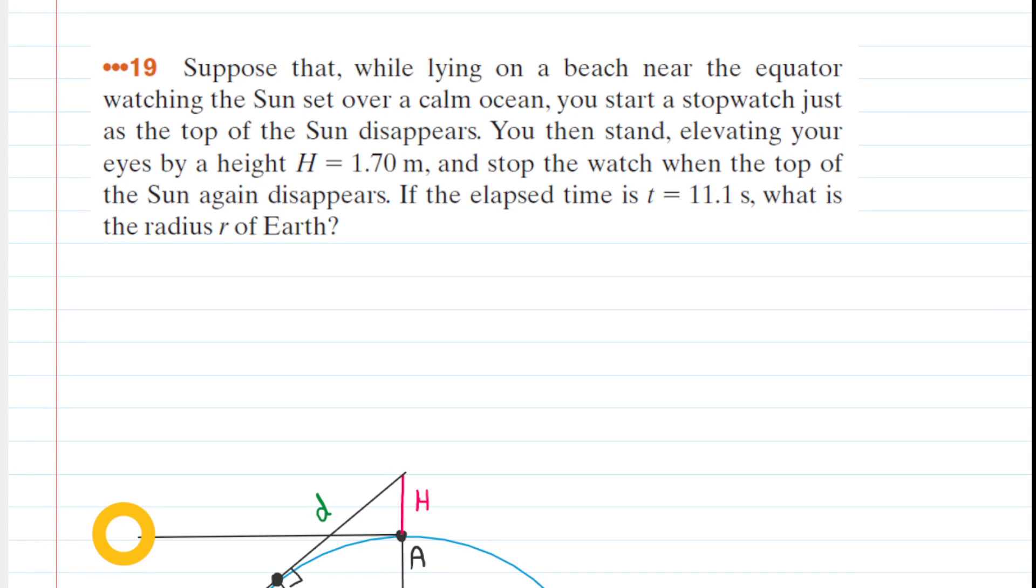Go ahead and pause the video and reread the problem to yourself if that would help you get things started. What we're going to see is that after this individual stands up after viewing a sunset, counts a few seconds, and then looks to the next sunset, she would be able to estimate the radius of the Earth based on her height. Seems a bit far-fetched, but hopefully the following calculations justify this approach.